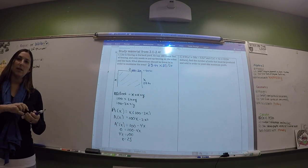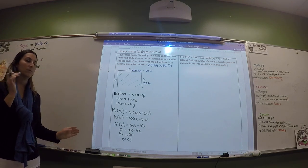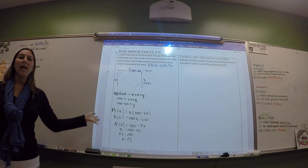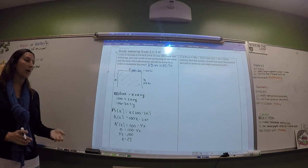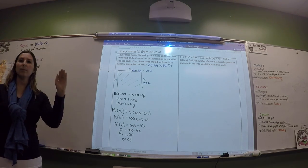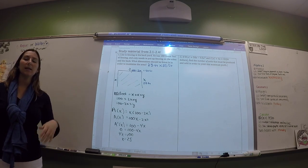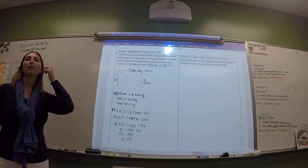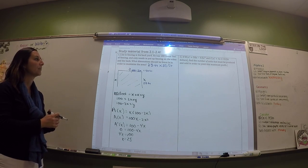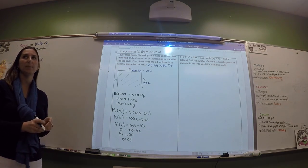You should say 25 feet by 50 feet. ATQ — answer the question. For these optimization problems: draw a picture, use common sense, use the derivatives, and answer the question. It's going to be some sort of optimization question where you maximize either area or volume or something.